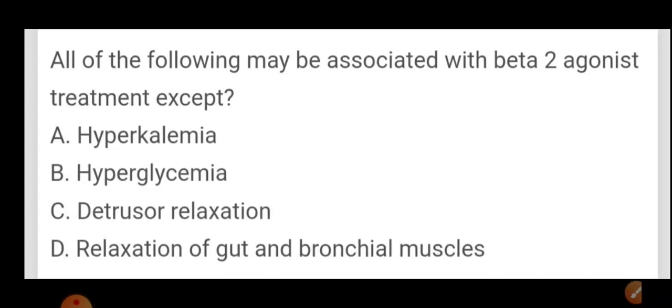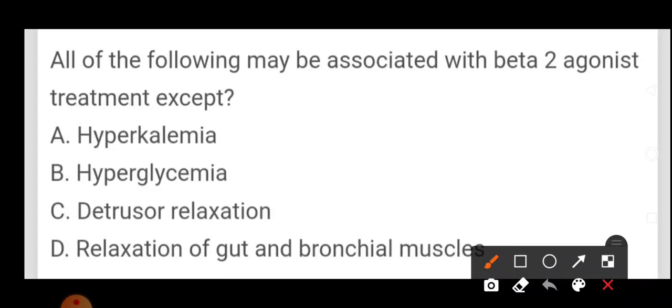All of the following may be associated with beta-2 agonist treatment except hyperkalemia, hyperglycemia, detrusor relaxation, relaxation of gut and bronchial muscles. So beta-2 agonist causes hyperglycemia.